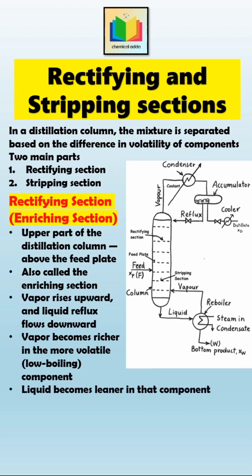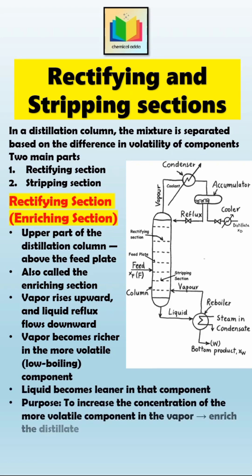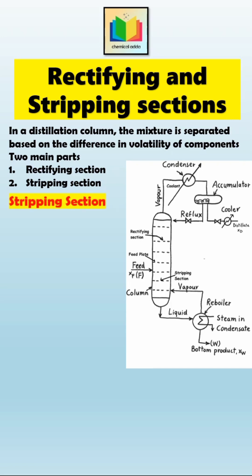The rising vapor becomes richer in the more volatile, that is, low boiling component, while the descending liquid becomes leaner in that component. Therefore, the purpose of this section is to increase the concentration of the more volatile component in the vapor, to enrich the distillate.